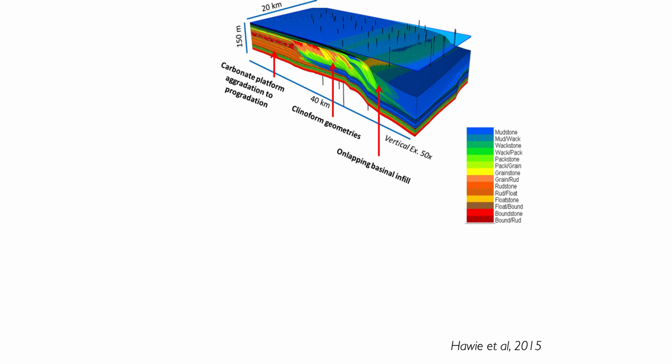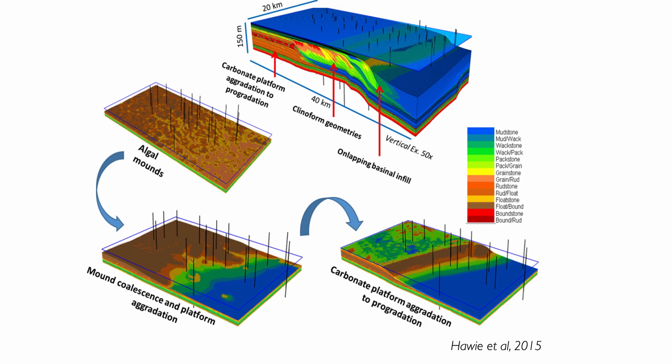In physical modeling — in this case, forward modeling of stratigraphy — we use boundary conditions such as paleotopography and production rates of carbonates. We model the physics through a physical equation, either forward or backward, and then when we obtain a result, we compare it to our geological reality.